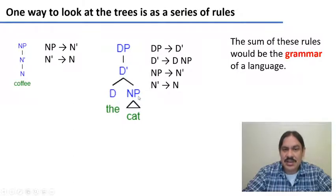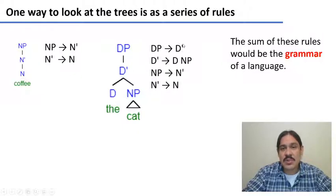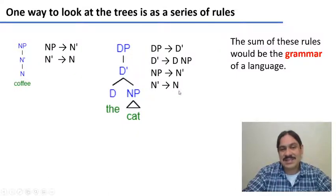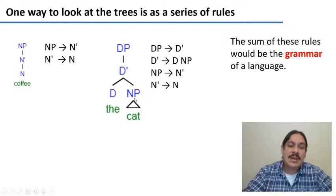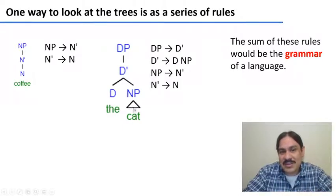Likewise, the structure 'the cat' could be redrawn as a series of rules. A determiner phrase projects a determiner bar. A determiner bar projects a determiner followed by a noun phrase. And then the noun phrase projects the same n-bar, and the n-bar projects the same noun as in the previous case. This triangle here means that we are not writing the whole structure — it's an abbreviation — but we know that inside the NP there should be an n-bar and an n, which is 'cat.'